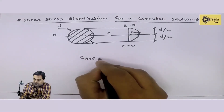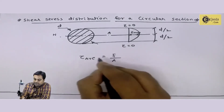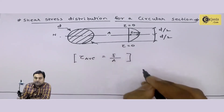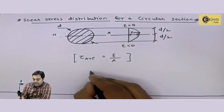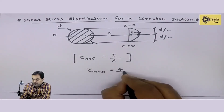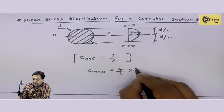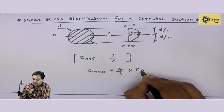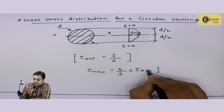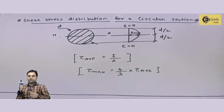Average shear stress is the same formula: shear force upon area. Maximum shear stress will be 4 by 3 into your average shear stress. So if we remember these two formulae, we can solve any problem for a circular section.